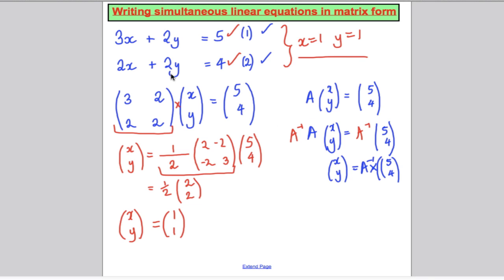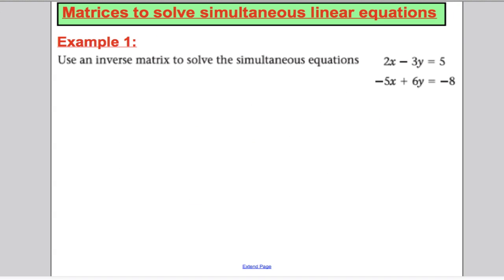So [x; y] is [1; 1], which is exactly what we had. Solving these simultaneous equations is equivalent to solving a matrix equation, which we can do by applying inverses to both sides. At the moment this might seem difficult, but after a while it's quite straightforward. You can imagine a computer finding this much easier than doing the algebra in the traditional way. So let's have a go at an example.